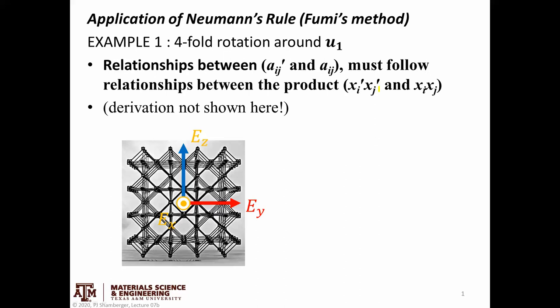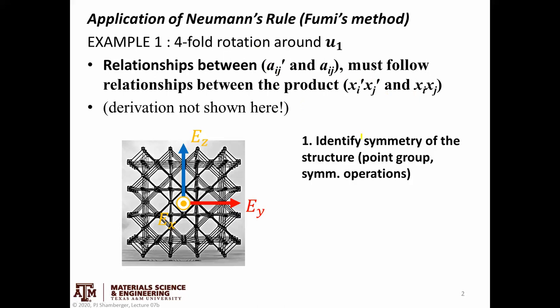So what does that mean? X_i X_j, X_i' X_j' — this is basically saying if we track what a single point in space does in response to this symmetry operation, we can use that transformation to keep track of the elements within the tensor matrix. Let's see what this looks like.